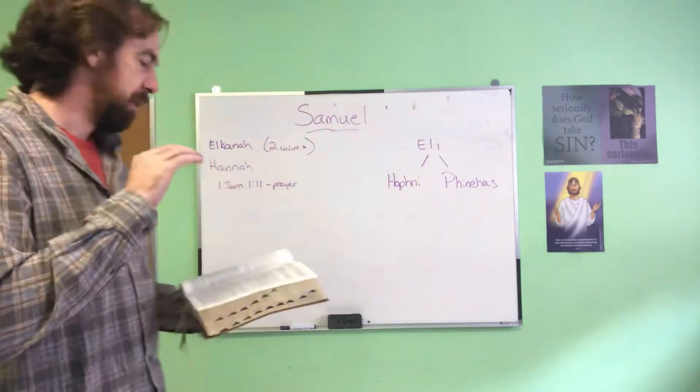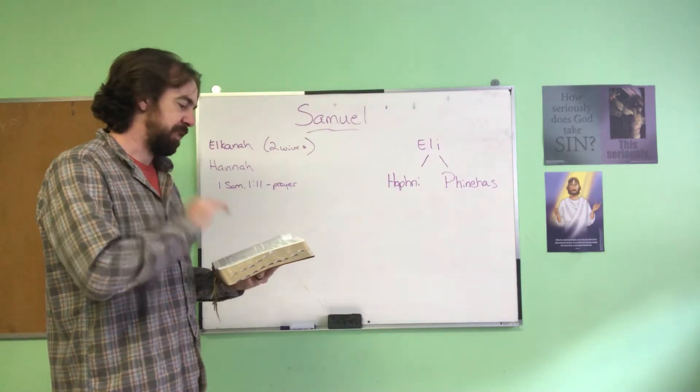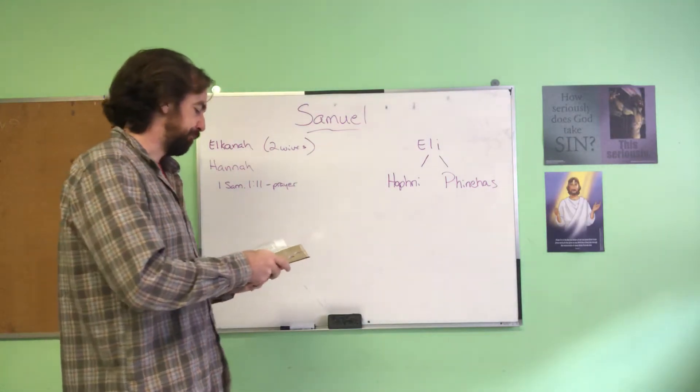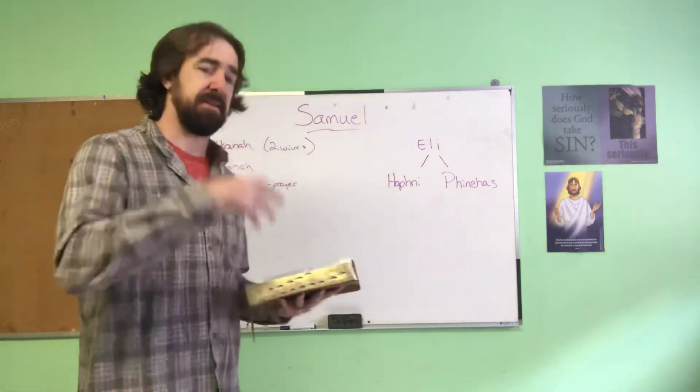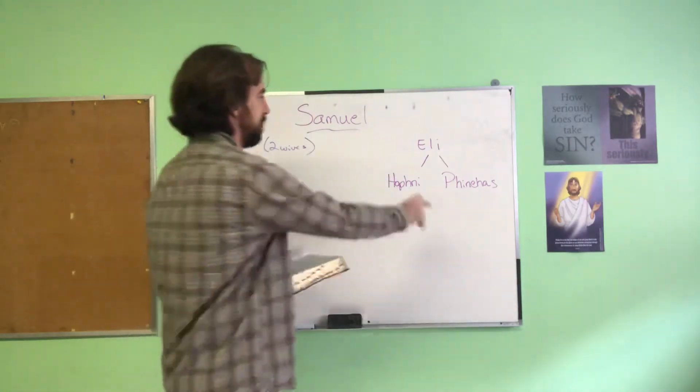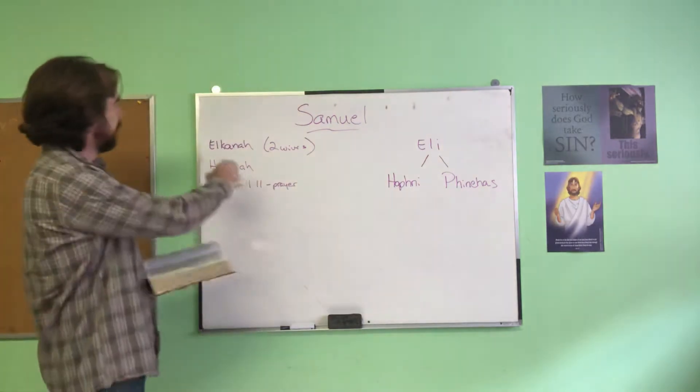This is a time about 200 years into the cycle of judges. Eli was next to last, and he's like their chief priest, right? He has his two sons, so they're in the temple doing things.